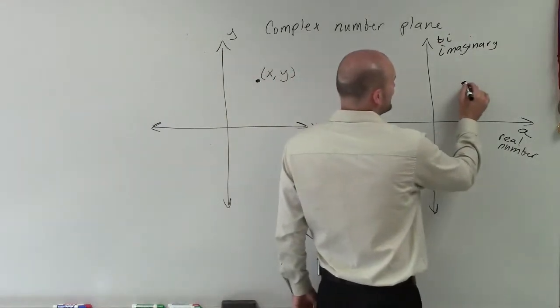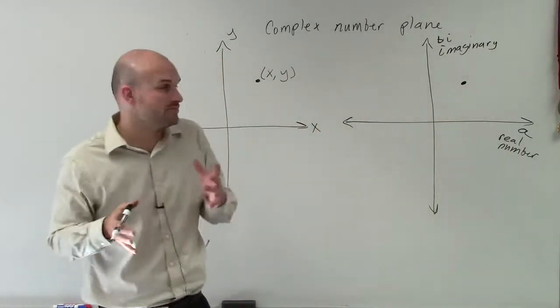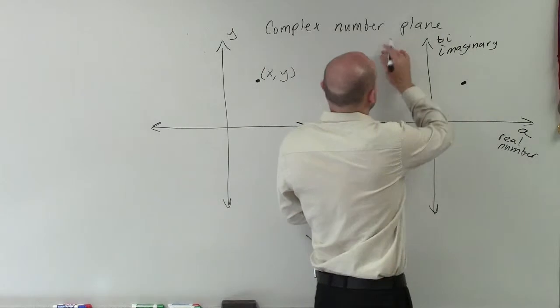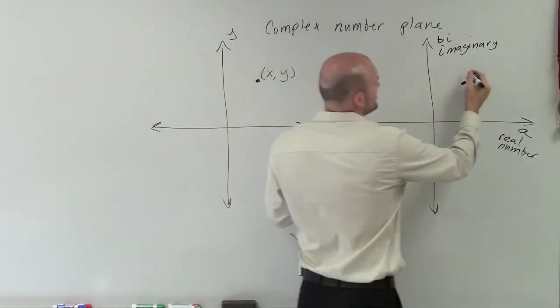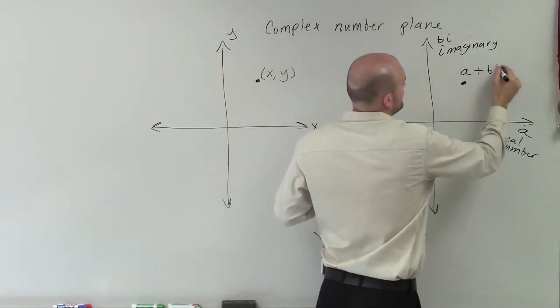So therefore, if I have a point that I'm going to have to be able to describe, that is going to be the form of our complex number. So it would be a plus bi.